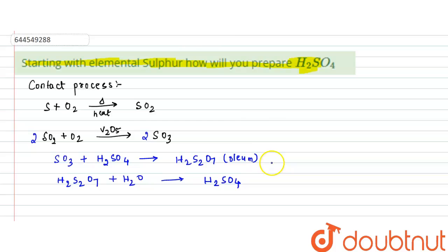This is the way how elemental sulfur can be used to prepare sulfuric acid. This reaction takes place around 700 Kelvin, and this is the entire reaction. Now here, this H2S2O7 is a highly concentrated form.